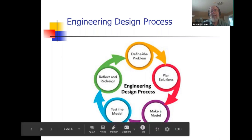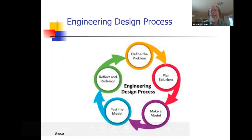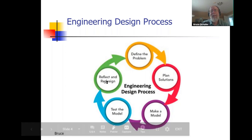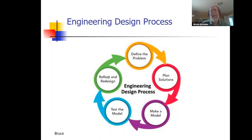You can see the definition of the problem at the top of the diagram. Then planning solutions, making a model or prototype, testing, and then communicating, reflecting, and proving — these are the themes of the green circle in the diagram.